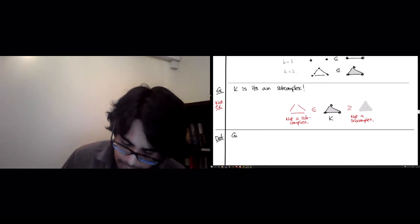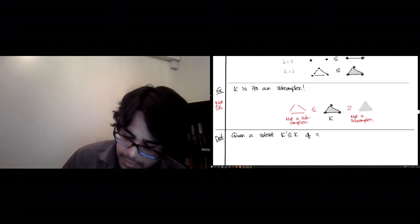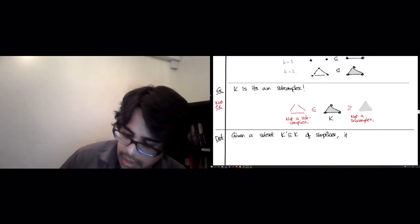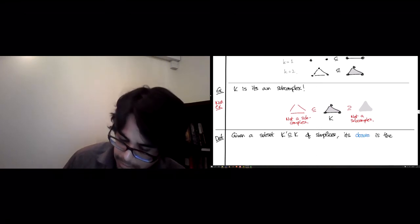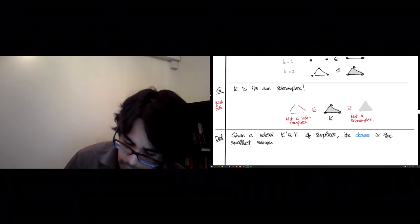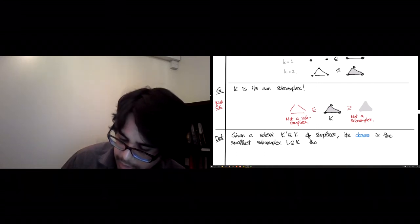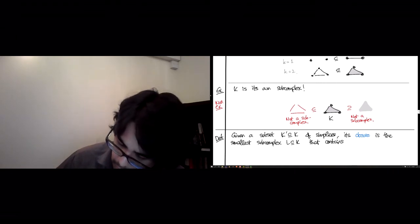Now, this sounds fairly straightforward, so we should just define it. Given a subset K prime of simplices in K, its closure is the smallest subcomplex of K that contains K prime.